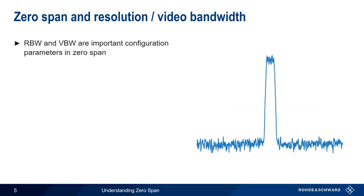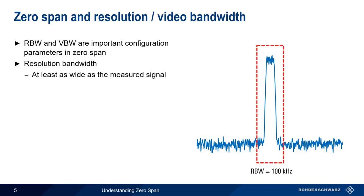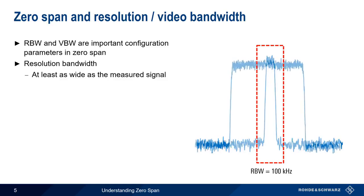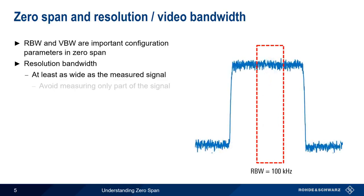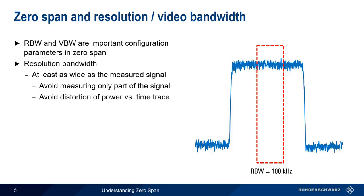When configuring Zero-Span on a spectrum analyzer, we supply the center frequency and, of course, set the span to zero. We also need to decide on values for resolution bandwidth and video bandwidth. Resolution bandwidth should be set at least as wide as the measured signal, preferably a little bit wider. Using a resolution bandwidth that's too narrow for the signal of interest means that we're only measuring part of the signal, and this could lead to inaccurate results. Too narrow a resolution bandwidth can also lead to distortion of a power versus time trace.